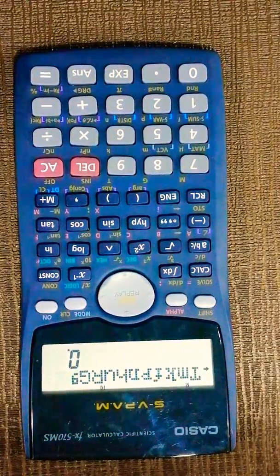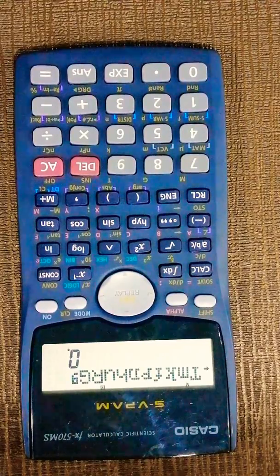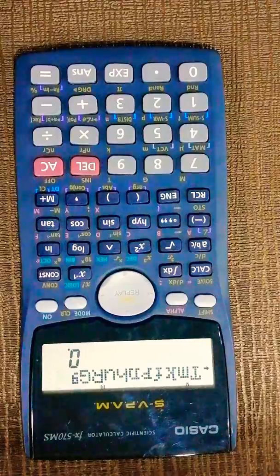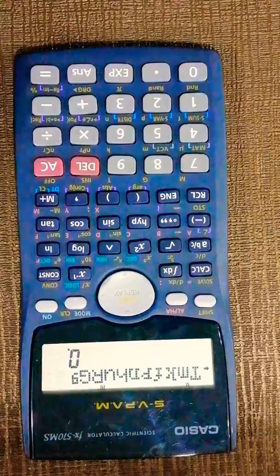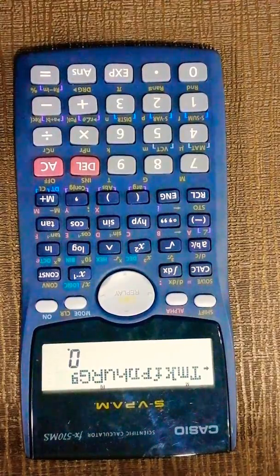So yeah, that's all guys you have in this calculator, scientific calculator Casio FX 570 MS. That's all you can type the alphabets. And thanks so much guys for watching this video. Don't forget to hit the like button and subscribe to my channel. Thanks so much.